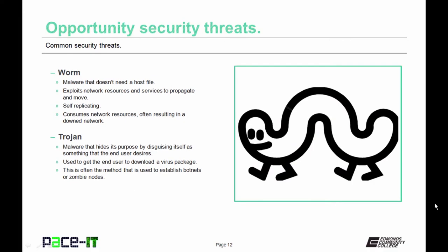Worms are different than viruses. Worms are malware that do not need a host file. They exploit network resources and services to propagate and to move, and they are self-replicating, unlike viruses. Worms mainly consume network resources, often resulting in a downed network.